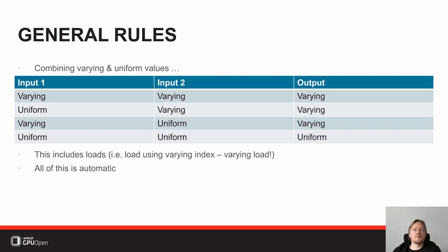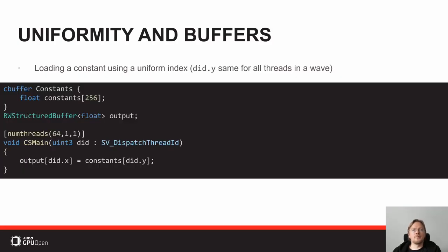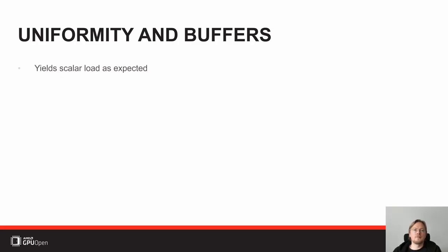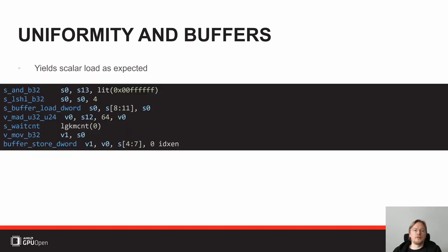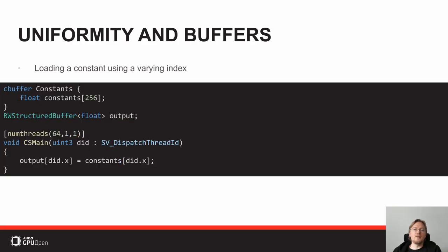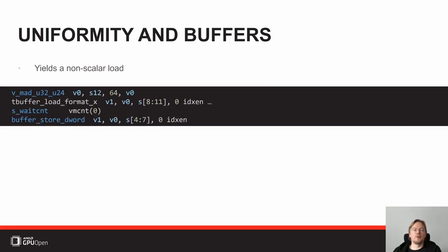First, let's look at how the vector varying property and uniformity impact code generation. A load from a constant buffer with a uniform index leads to a scalar load — clearly, because it's all scalar and uniform, we only need one value. It's an s_buffer_load. Loading a constant using a varying index, however, even though it's a constant buffer, we cannot load the same value because different lanes need different values, so we must issue a varying load going to the vector unit — a t_buffer_load, which loads a different value per lane.